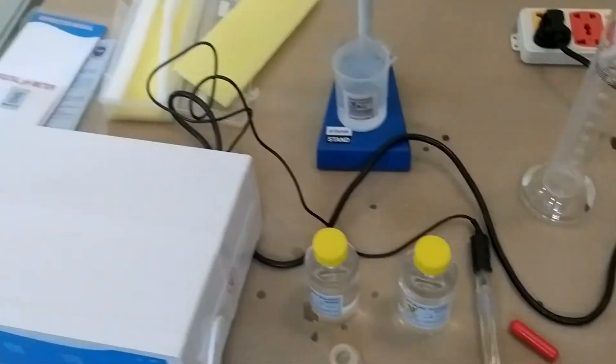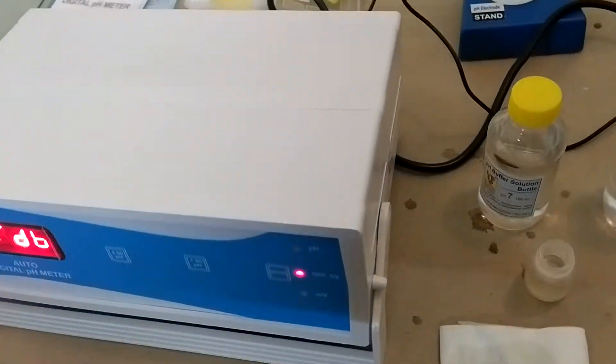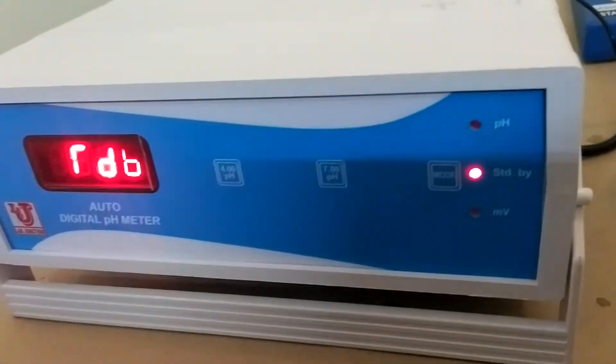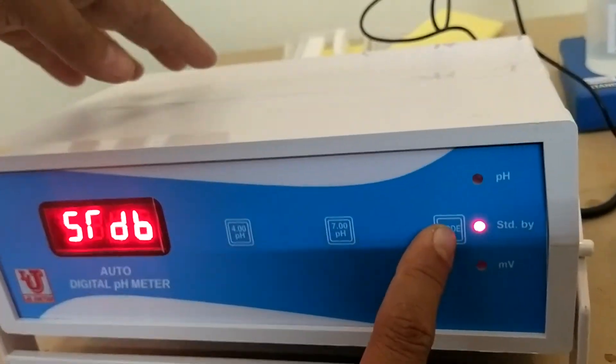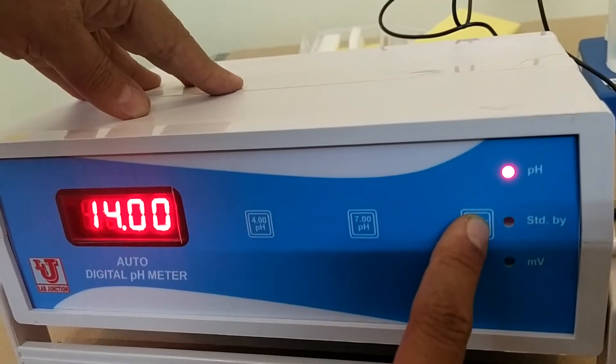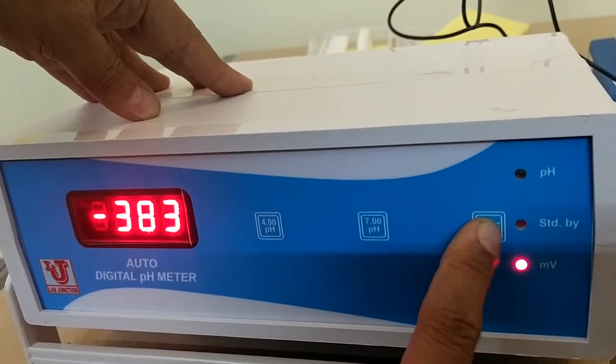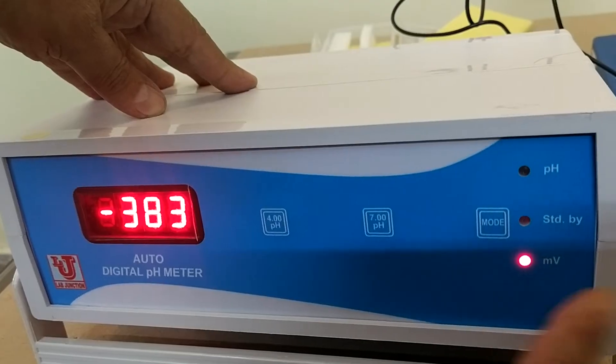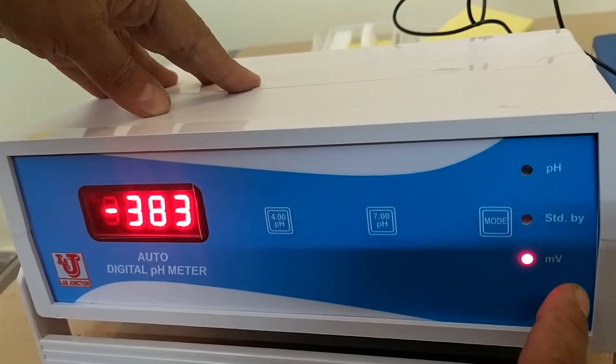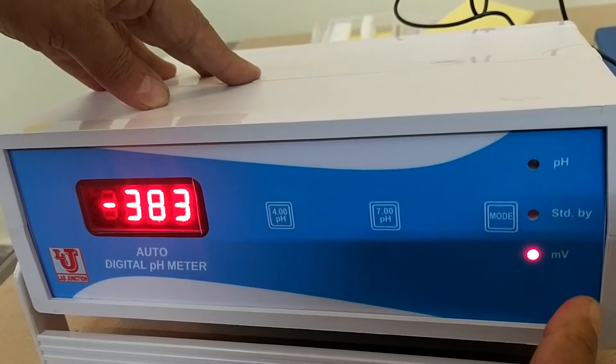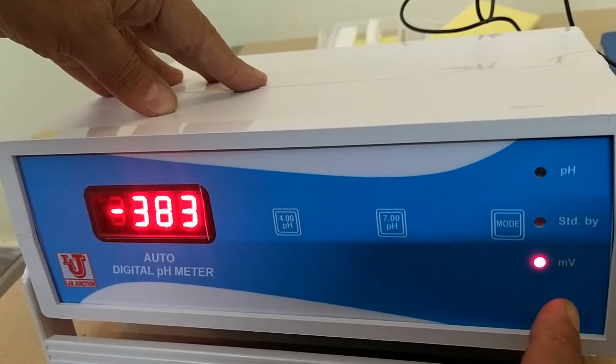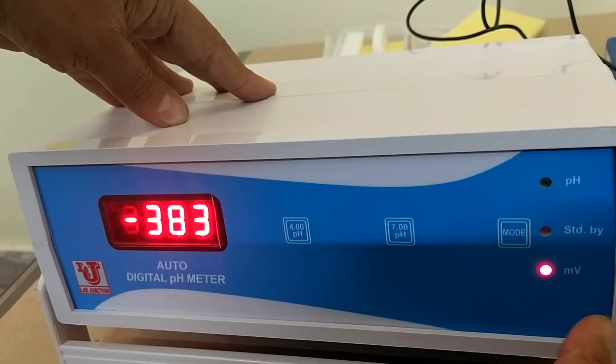Now how to calibrate this pH meter? These are the key keys. This is mode key, this is standby mode, this is pH mode, this is mV mode. mV means ORP: Oxidation, Reduction, Precipitation. It gives ORP reading up to 200 mV only.